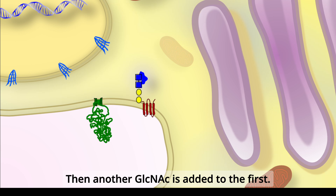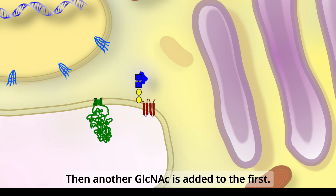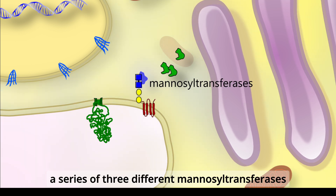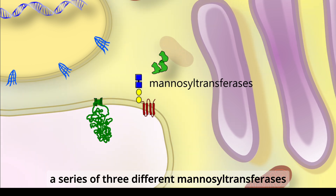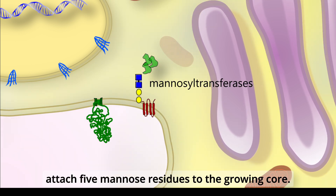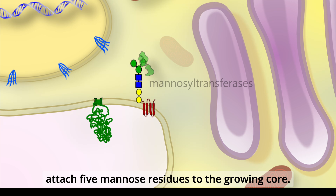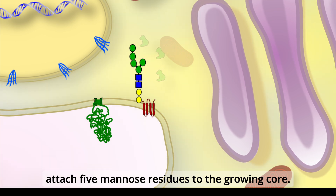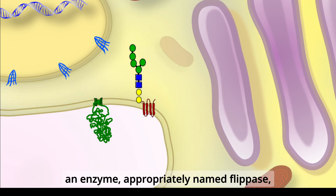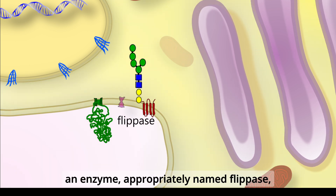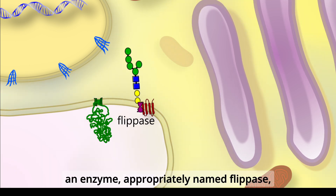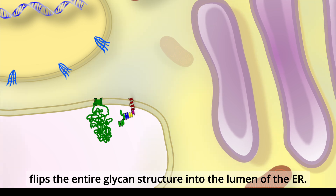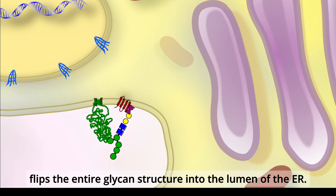Then another GlcNAc is added to the first. In the next step, a series of three different mannosyltransferases attach five mannose residues to the growing core. At this point, an enzyme appropriately named flippase flips the entire glycan structure into the lumen of the ER.